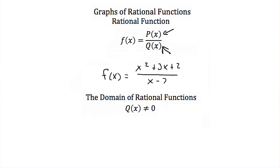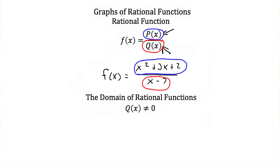Our numerator function, or p(x), would be x² + 3x + 2. Our denominator function, q(x), is just x - 7. What's important to realize about rational functions is that because we have a variable in our denominator, our domain is restricted because our denominator can never be equal to zero.